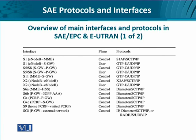We have the interfaces, the plane — either control or user plane — and correspondingly we have the protocols. Some of these protocols are readily understandable by students: for instance, Stream Control Transmission Protocol, IP protocol, User Datagram Protocol, the Diameter protocol which is used for AAA services, and RADIUS — the Remote Authentication Dial-In User Service — which is a predecessor to Diameter.